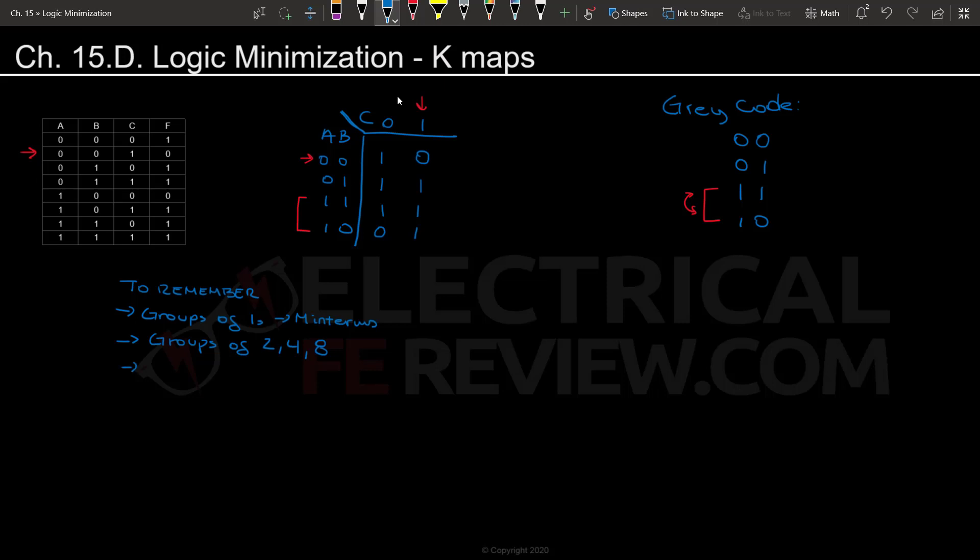Another thing to remember is that we are looking for the largest groups possible and the least amount of groups. So now that we know kind of the basics of what we're trying to do with kmaps, let's look at the example again. So we want the largest group possible of ones. They need to be next to each other.